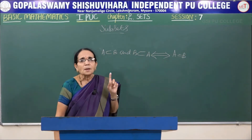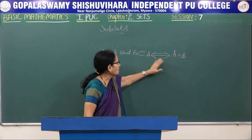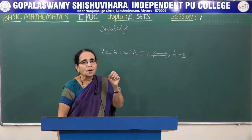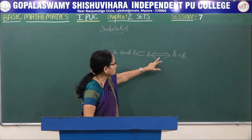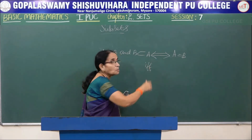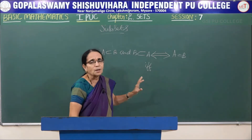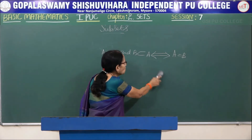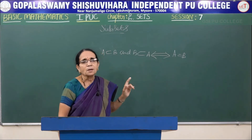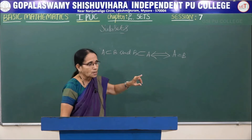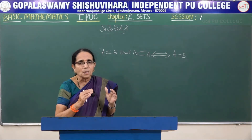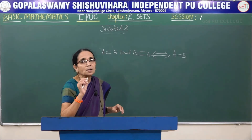This double-headed arrow notation can be read in two ways: 'implies and implied by,' or 'if and only if.' The phrase 'if and only if' is also called a necessary and sufficient condition. For short, we write 'iff.' So A is a subset of B and B is a subset of A if and only if A equals B — and conversely, if A equals B, then A is a subset of B and B is a subset of A.